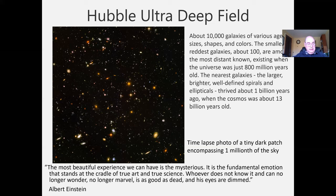It is 800 exposures taken with 40 orbits of the Hubble spacecraft around the Earth, going around and around, looking for a total of 11.3 days. This was taken over the span of 2003 and 2004, and this is what you get.